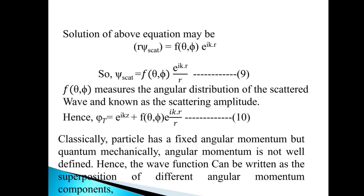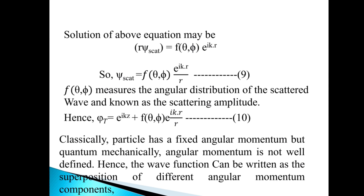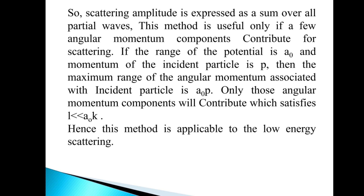Classically, the angular momentum of the particle is not precisely defined due to the uncertainty principle. Hence, quantum mechanically, the wave function can be written as a superposition of different angular momentum components. As a result, the scattering amplitude is expressed as a sum over all partial waves.